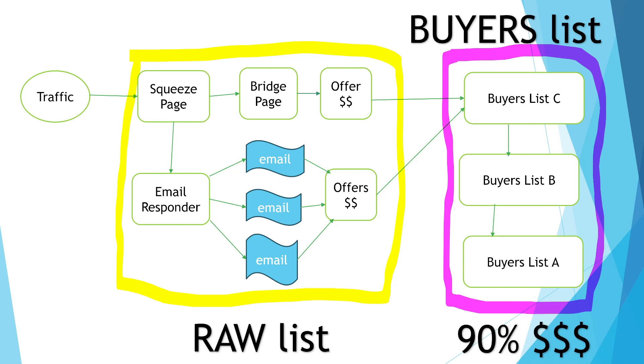This particular system — the Passive Income Profit System — is revolutionary, and we are using this to build our affiliate marketing business.